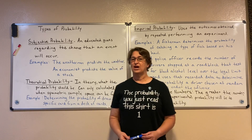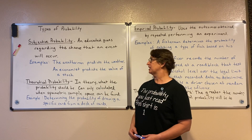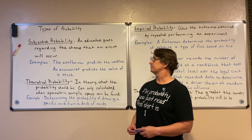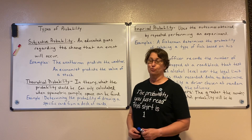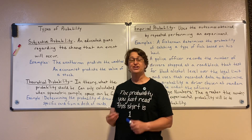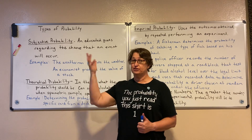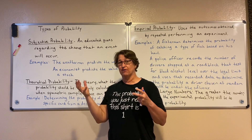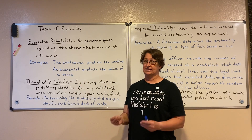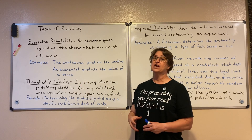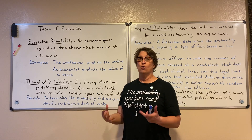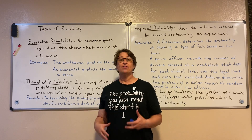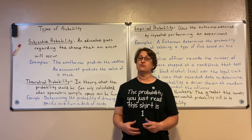First, let's start with subjective probability. Subjective probability is just an educated guess regarding the chance that an event will occur. So the weatherman, when he predicts the weather, he's basing that on different signs and things in the environment that help him make that educated guess. When he says it's a 90% chance, that's the probability that he believes it will rain.